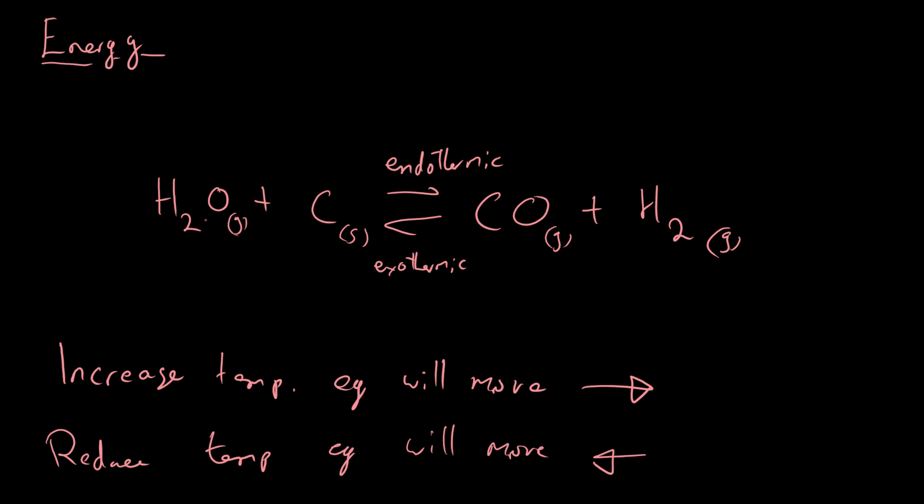So that's how changing conditions shifts equilibrium - the system moves to reduce any external change. This is especially important in a closed system where no reactants or products are added or removed, and we can change conditions to get as much of the desired product as possible. In the next video we'll look at the Haber process in more detail. If you have any questions please send an email or post a comment, and please like and subscribe!